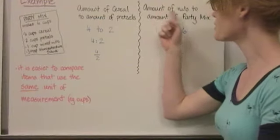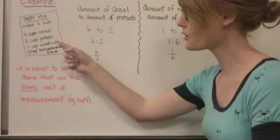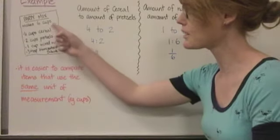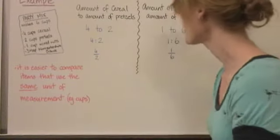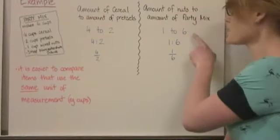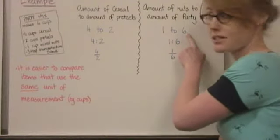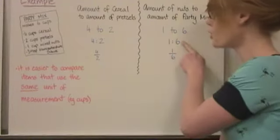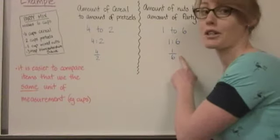If we wanted to compare the amount of nuts to the amount of party mix total, we would have to look at those numbers. So we have 1 cup of mixed nuts and 6 cups of party mix in total. So our ratio would look like this: 1 to 6, where we've got 1 cup of nuts to 6 cups of party mix. Or we could write it with a symbol 1 colon 6, or as a fraction 1 over 6.